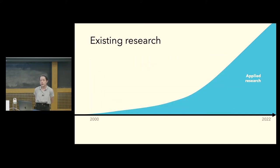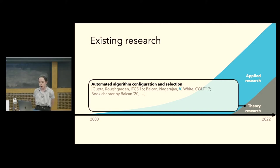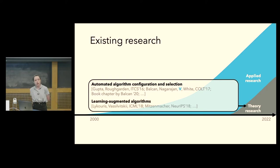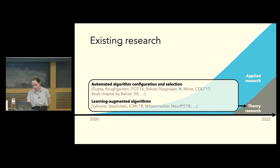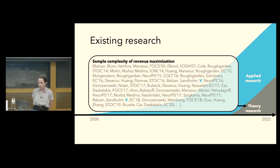In contrast, there's surprisingly little known about this topic from a theoretical perspective. But this started to change about five years ago with a surge of interest in data-driven algorithm design from a theoretical perspective, including automated configuration and selection — inspired by a paper by Tim Roofgarten and Rishi Gupta — as well as learning augmented algorithms. There has also been a huge amount of interest in using machine learning for mechanism design and revenue maximization, with an increase of interest in the past eight years or so.